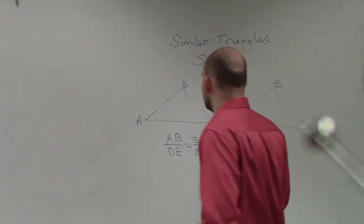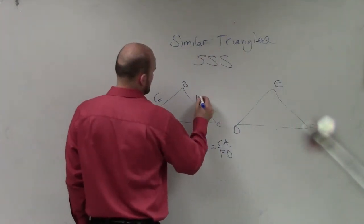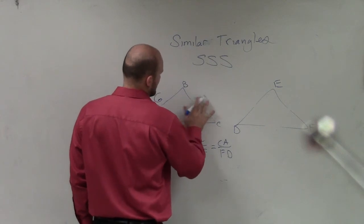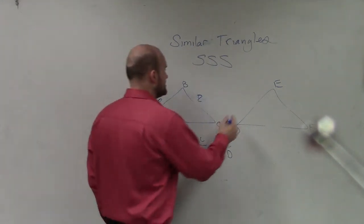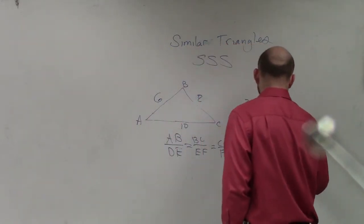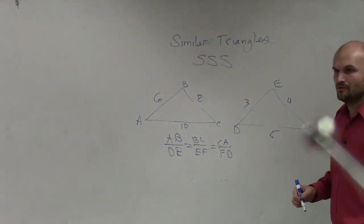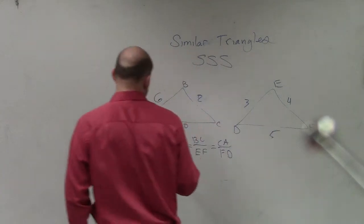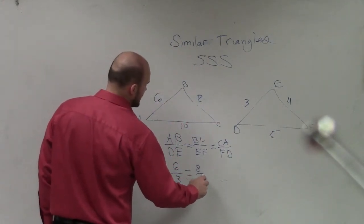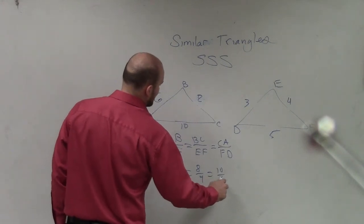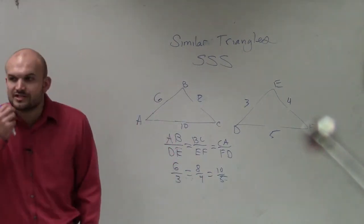And let me give you an example. Let's say I had 6, 8, and 10, right? And then I said this was 3, 4, and 5. And so if we were going to do this the way I was explaining it, I'd have 6 over 3 is equal to 8 over 4, which is equal to 10 over 5. Are those all equivalent ratios? Yes.